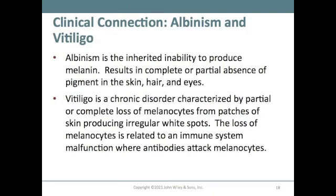Albinism is the inability to produce melanin, resulting in very white hair, red eyes, and very light skin due to the absence of pigment. Vitiligo is a chronic autoimmune disorder where patches of skin lose the ability to produce melanin, causing white spots. The body's own antibodies attack melanocytes in those areas, creating the discoloration.